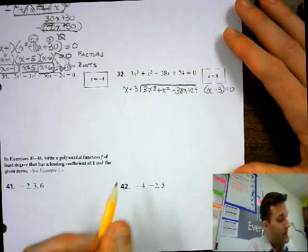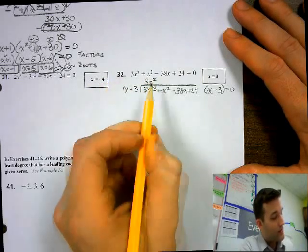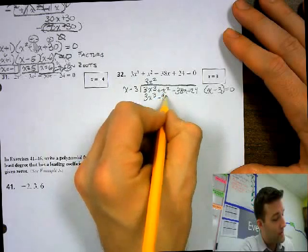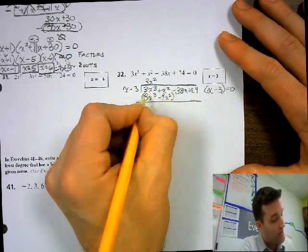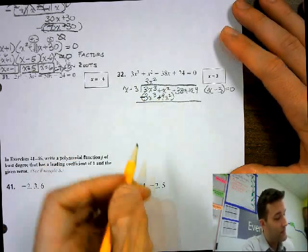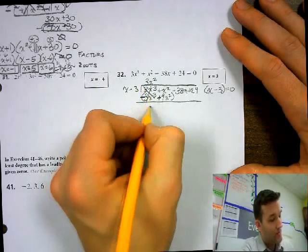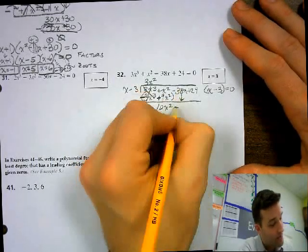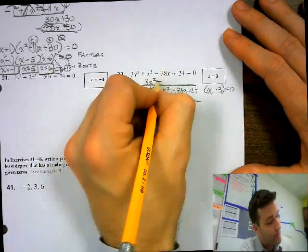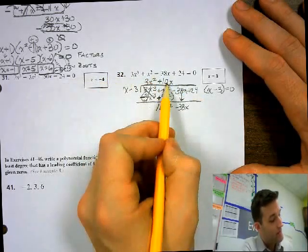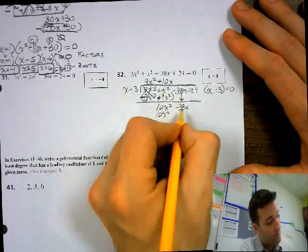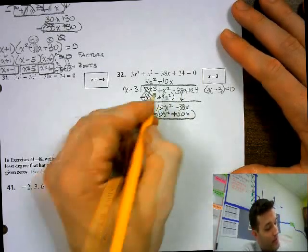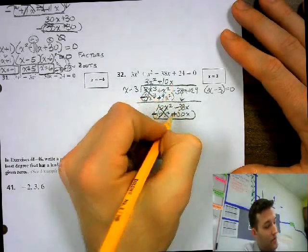So I'm going to multiply 3x squared times x. 3x squared times x is 3x cubed. 3x squared times negative 3 is negative 9x squared. When you subtract, you're going to change all of the signs. This becomes negative, this becomes positive. That cancels out. 3x cubed minus 3x cubed is 0. And 9x squared plus x squared is 10x squared. You're going to bring down your negative 38x. And then add a 10x up here. 10x times x is 10x squared. 10x times negative 3 is negative 30x. When you subtract, you can switch your signs. And 10 minus 10x squared cancels. And negative 38 plus 30x is going to give you negative 8x.